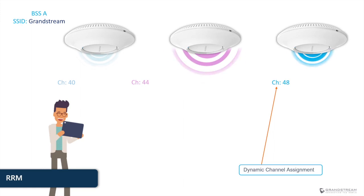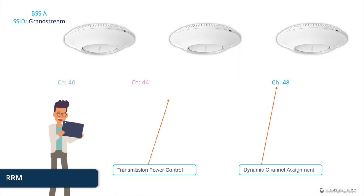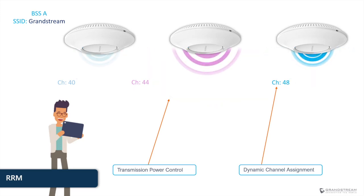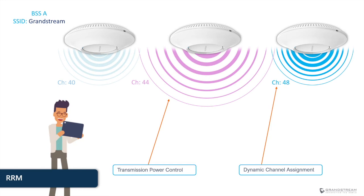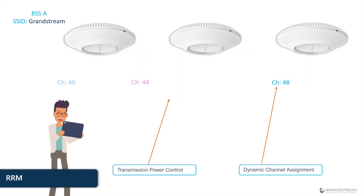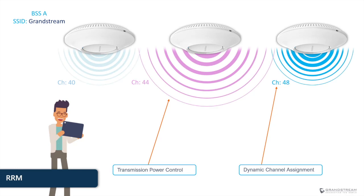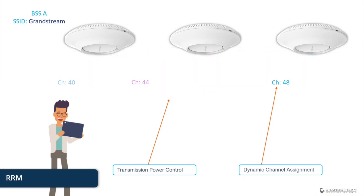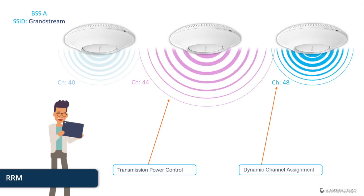In conjunction with Dynamic Channel Assignment, RRM uses TPC (Transmit Power Control) to reduce the interference caused by an overreaching signal. DCA ensures each access point uses a non-overlapping channel for transmission, while TPC reduces the transmit power when other APs are within range.